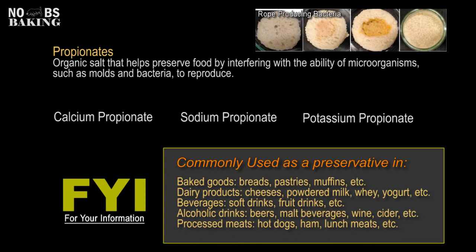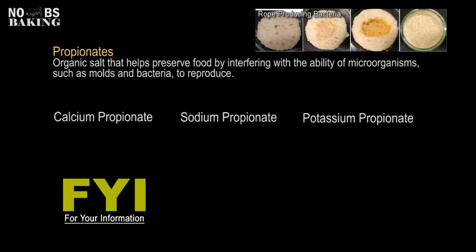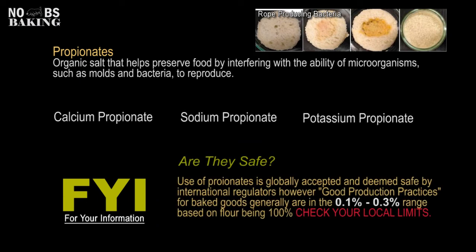Most bakers are familiar with the ropy bread condition. It can contaminate the whole bakery, where the breadcrumb loses its structure and has a characteristic pinkish color and smells like melons — rotten melons.